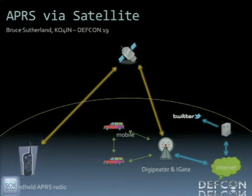There was one other service out there where you could enter your Twitter information and post to your own account, but that didn't work either. So here's a graphic showing the basic layout of the system: the handheld radio transmits your message up to the satellite, the satellite repeats it back to Earth within that 2,500-mile area, it gets picked up by an iGate, goes on the internet, and my gateway sends it to the @hamradiotweets Twitter account.